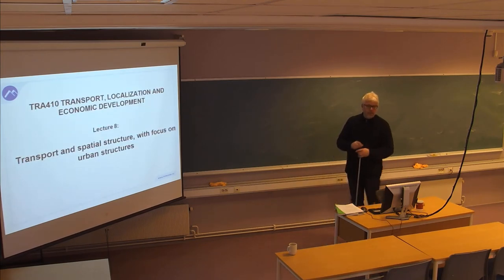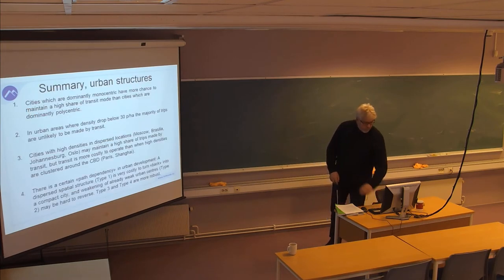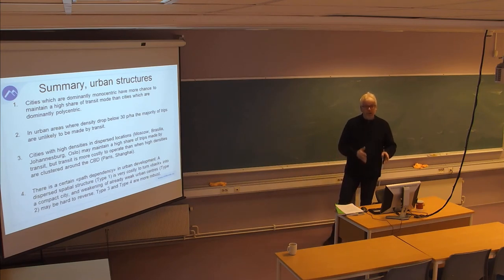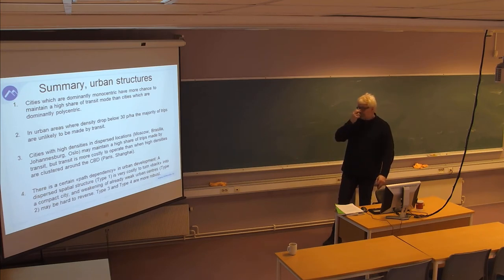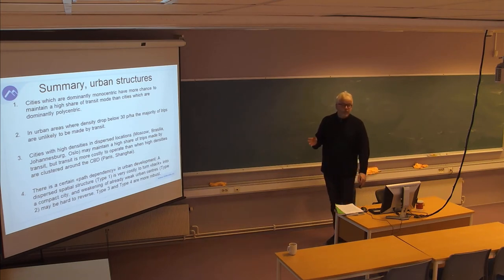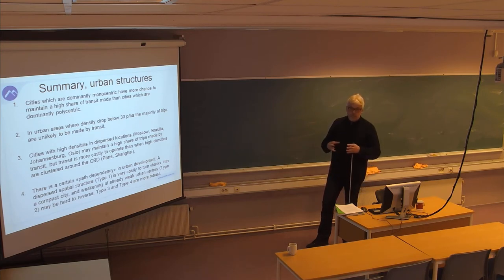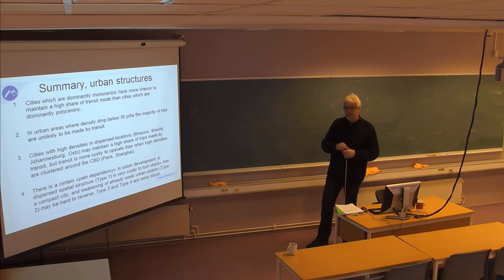Lecture eight was on urban structures, where I went through four different types of urban structures from type one, which is a very dispersed structure — very car-dependent — typical for American cities, which have had very low energy costs, low petrol prices, big cars, big road networks, and small city centers. People live very dispersed and they drive a lot.